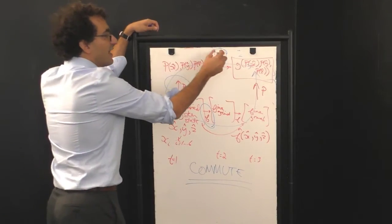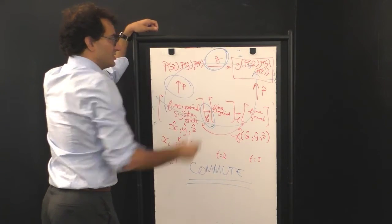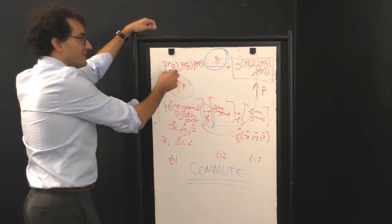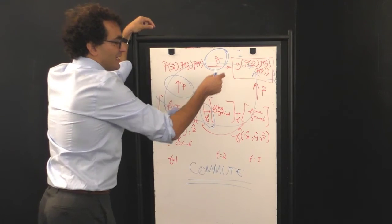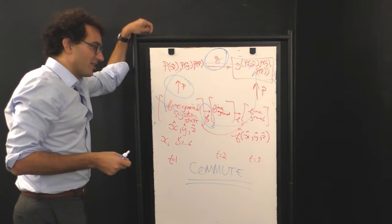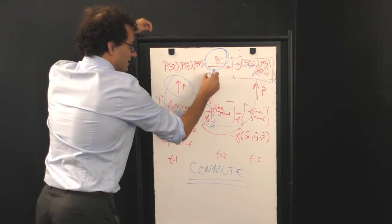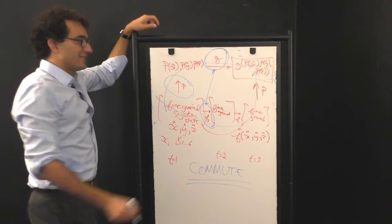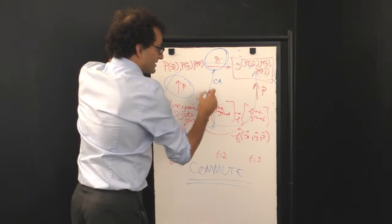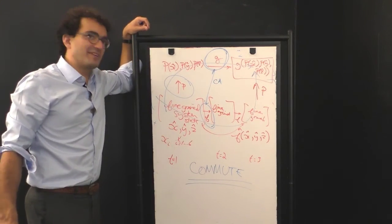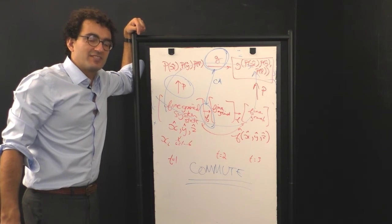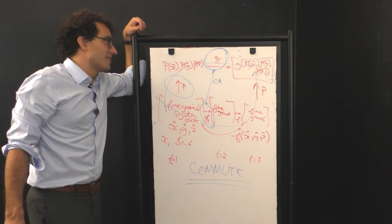Notice that this function here, g, takes in three binary variables and spits out a single binary variable. And so, it is in fact, in this same CA model class, it is indeed one of the 256 of the cellular automata that we can think about to begin with.